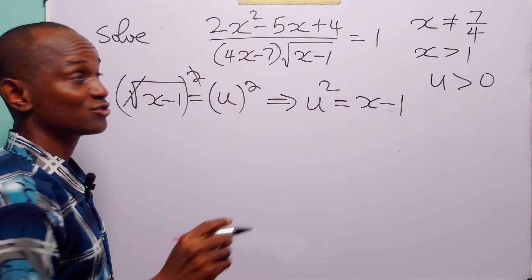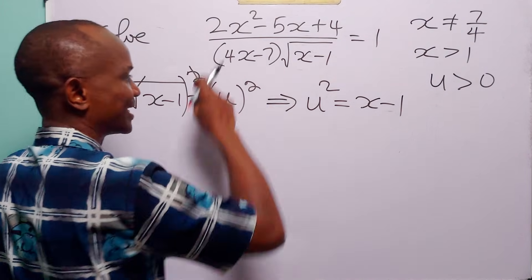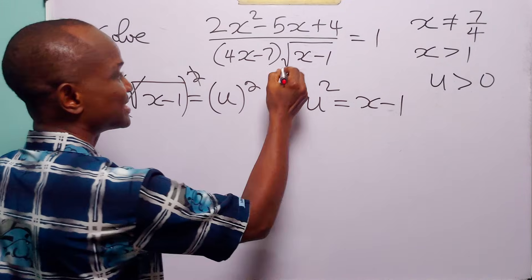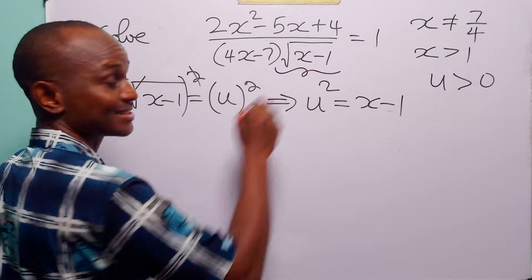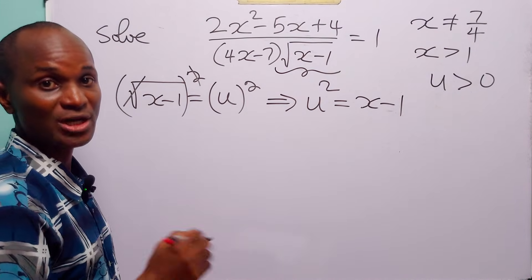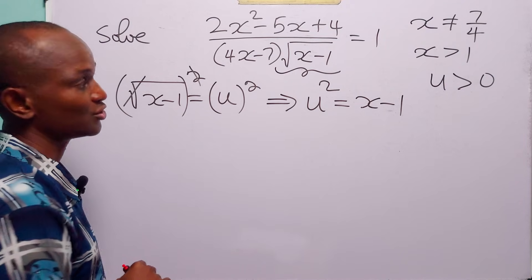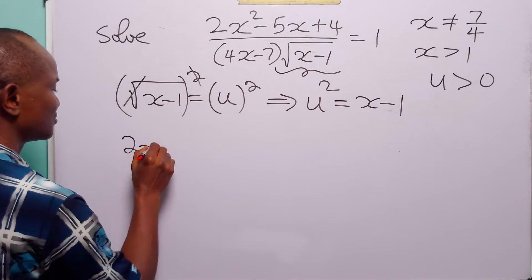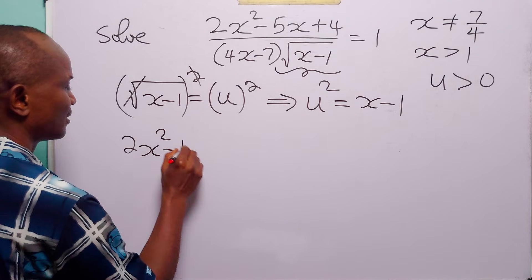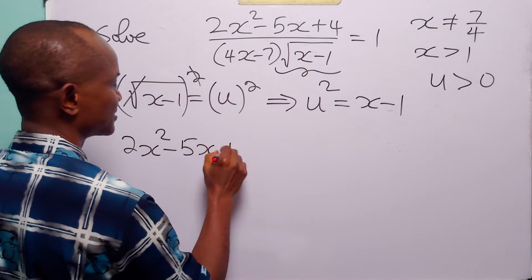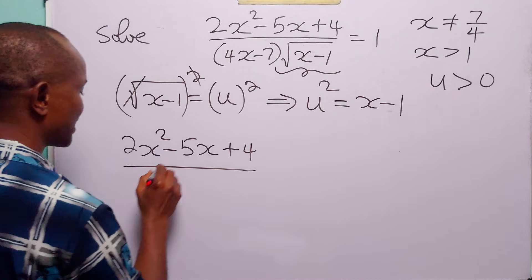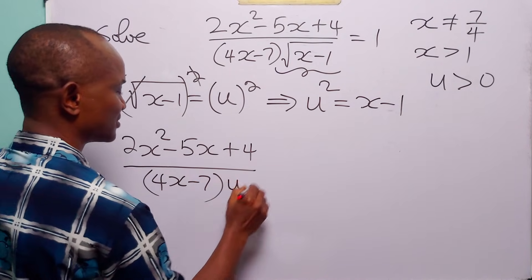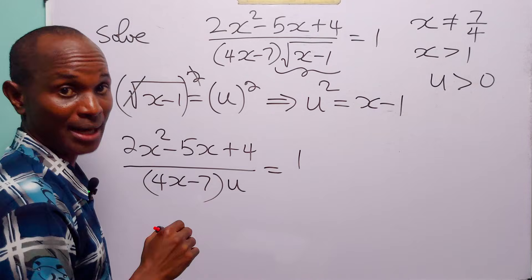We are not going to try to rewrite the entire equation in terms of u. What we are going to do is simply replace this quantity with u. Rewriting this equation, we have 2x squared minus 5x plus 4, divided by 4x minus 7 times u, is equal to 1.